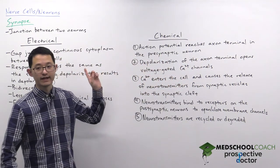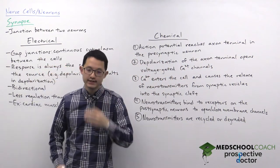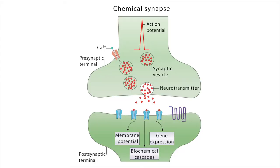Now let's look at chemical synapses. Chemical synapses are more complicated than electrical synapses — the cytoplasm of the two cells are not continuous. In the presynaptic neuron, the axon terminals have synaptic vesicles that can be released into the synaptic cleft. When this happens, the neurotransmitters will diffuse across the synaptic cleft to bind to receptors on the postsynaptic membrane of the cell's dendrites.